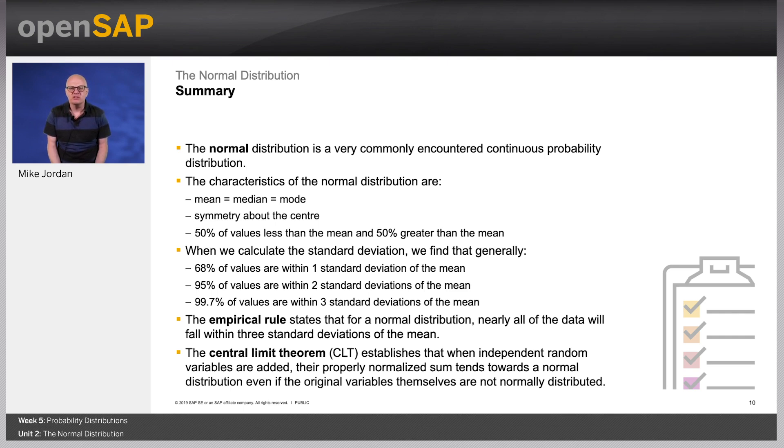The empirical rule states that for a normal distribution, nearly all of the data will fall within three standard deviations of the mean. The central limit theorem establishes that when independent random variables are added, their properly normalized sum tends towards a normal distribution, even if the original variables themselves are not normally distributed. In the next unit, we'll consider kurtosis and skewness.